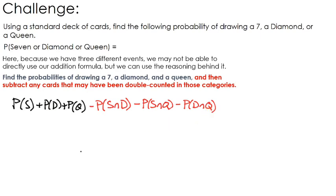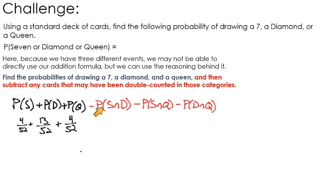The probability of drawing a 7: there are four 7s, one in each suit, out of 52 total. The probability of drawing a diamond: one-fourth of our deck is diamonds — 13 diamonds in a deck of 52 cards. The probability of drawing a queen: there are four queens, one for each suit, out of 52 cards. But now we have to subtract anything that may have gotten double counted. For example, are there any cards that are 7s and diamonds?